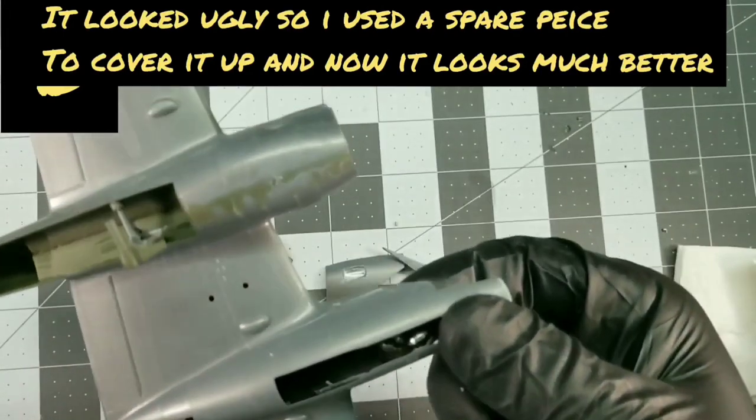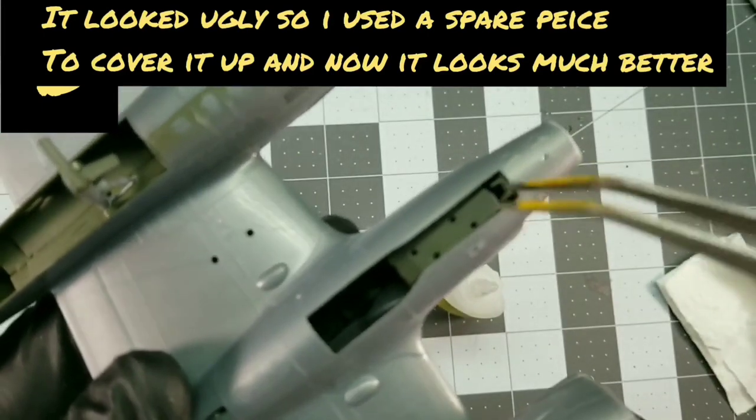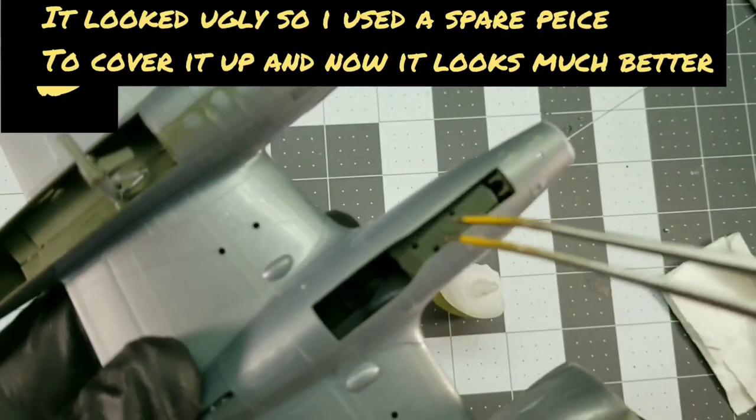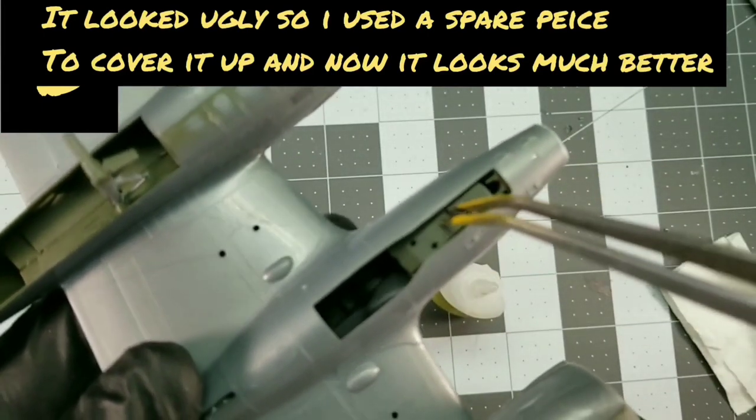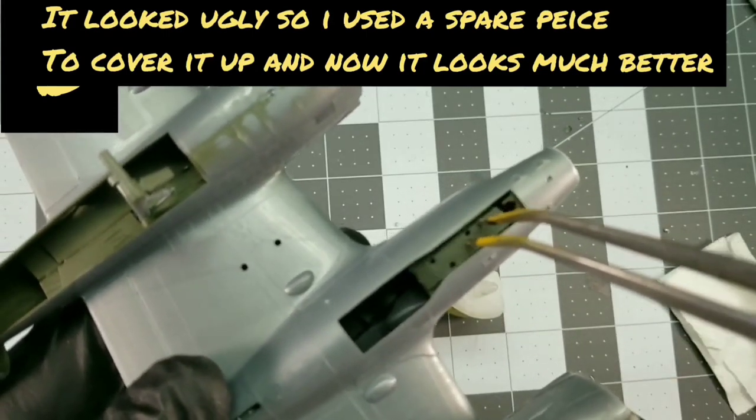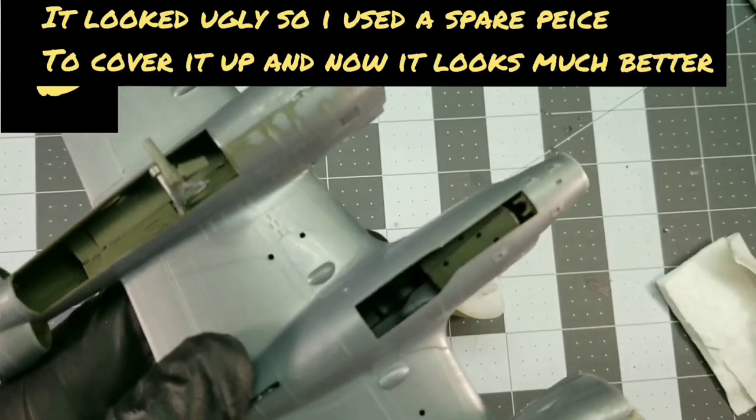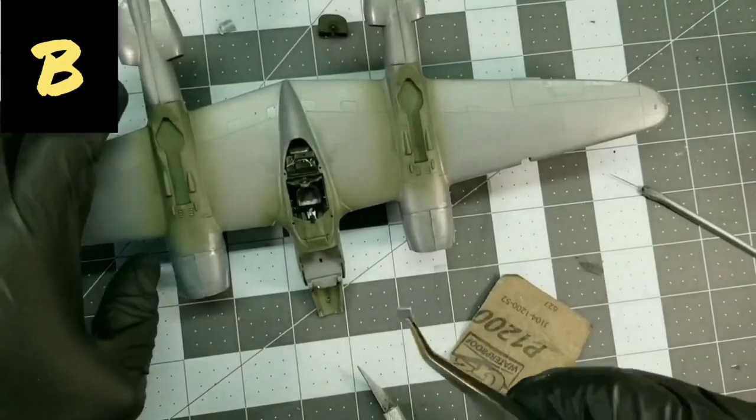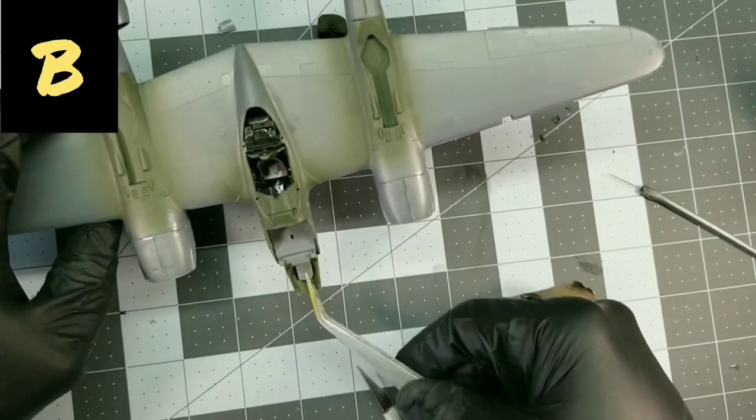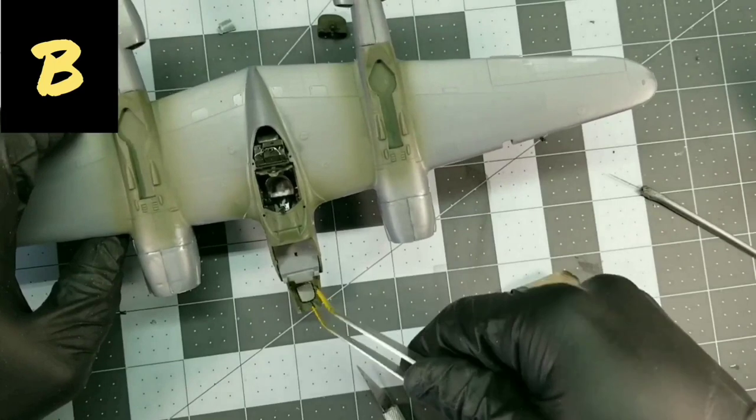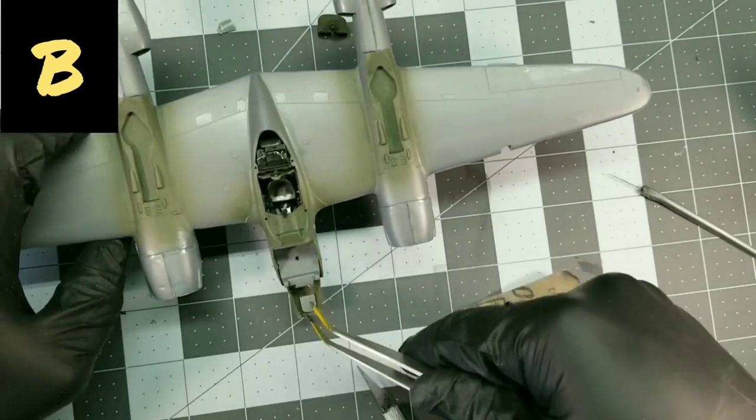So each P38 has a different method of how I got nose weight into it. One of them has it in the engines, which I didn't even show. This one has it underneath the bombardier area. And then, obviously you saw earlier, the night lightning has it right in the nose. And none of them worked.